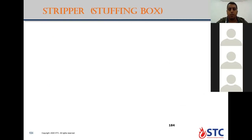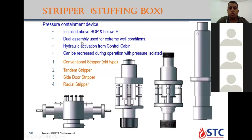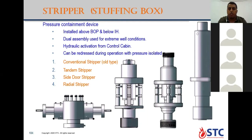Now going through the stripper assembly — in some manuals it's called a stuffing box. The main purpose of the stripper: it is installed above the BOP and below the injector head. It can be dual or tandem assembly — two strippers — but the two strippers are considered as one barrier, though it is a double or dual barrier. For extreme well conditions, as discussed, you have hydraulic pressure activation from the control panel. This is only to stop leakage — we will not continue operating; we need to stop to fix the leak or change the packing element of the stripper assembly.